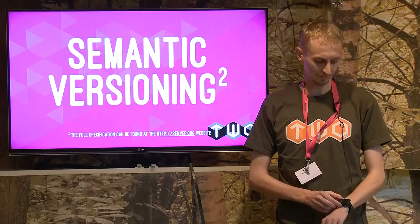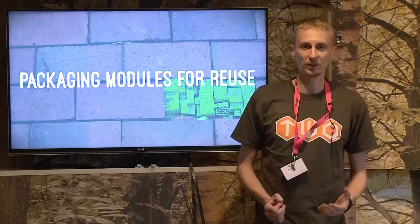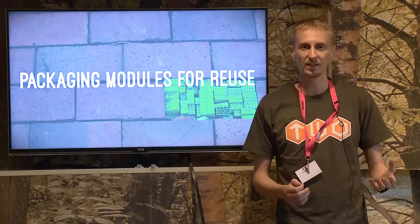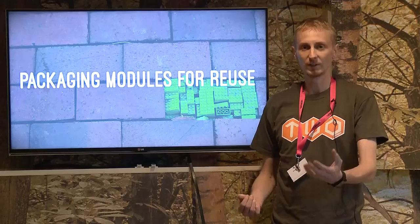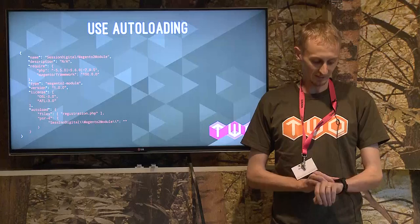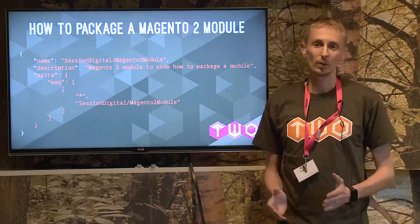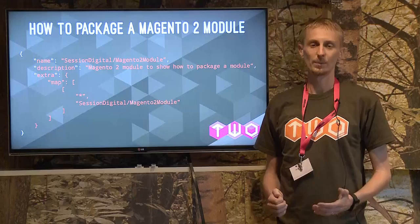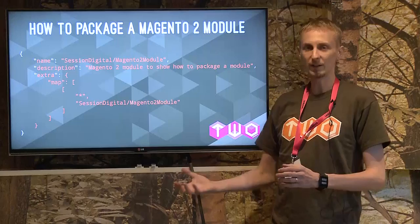We've seen how we can use Composer and how it's beneficial to the Magento core, but how do we actually make our modules composable? We now know that all modules inside Magento 2 live in a single namespace. We've no longer got design assets in one place, JavaScript in another, and code in another. We've got a single composable archive, which is our module. In the Merchant Beta, we still had to rely on copying files from the vendor folder — which is what Composer uses — into the app code directory, which is what Magento 2 understands.